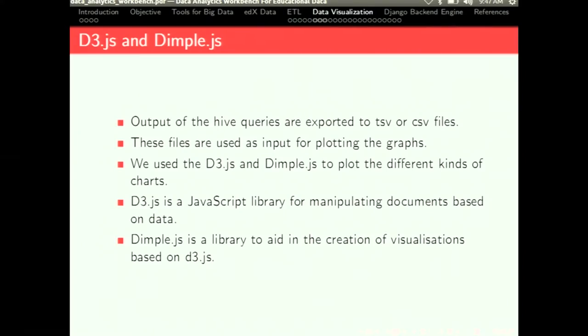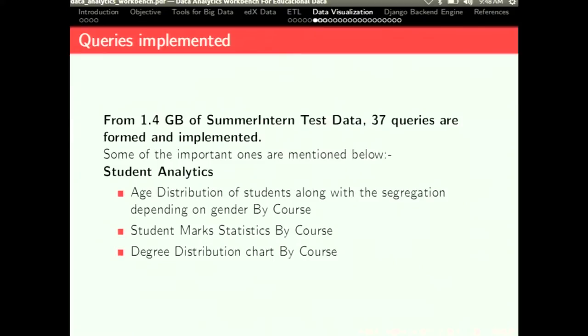Now, starts the visualization part which Prashant will handle. For the data visualization part, we use the D3 and the dimple.js JavaScript library. And these are basically two JavaScript libraries and dimple is based on D3 itself. And first what we did, the output of the hive queries is transferred into the TSV and CSV files. Then these files are used for plotting the graphs. These are some of the queries that we have implemented on the summer intern test data. The data was around 1.4 GB and 37 queries are formed and implemented. Some of the important ones are mentioned below. We categorize all the queries into four parts.